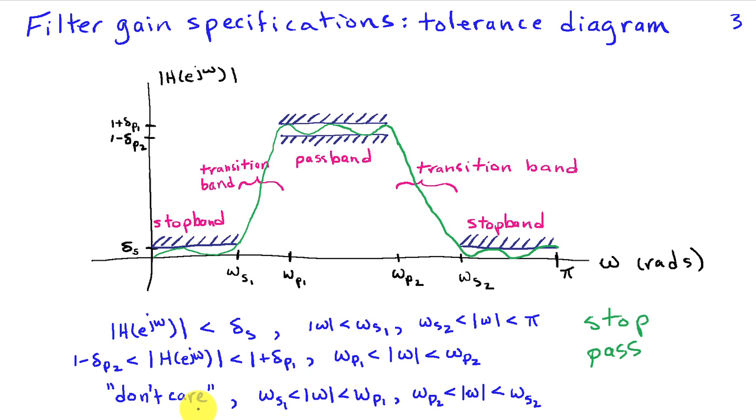we sometimes say that we don't care what the response is because we're going to allow it to be somewhat arbitrary. There's two of them in this band pass filter case. We've got magnitude of omega between omega s1 and omega P1 on the lower transition band.